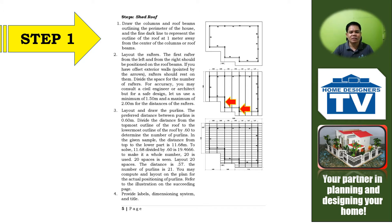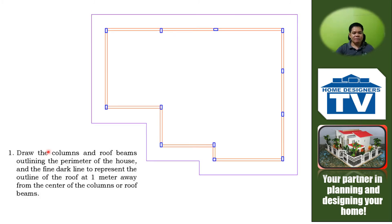We'll start with step number one. The first thing you're going to do is draw the columns and roof beams outlining the perimeter of the house, using a fine dark line to represent the outline of the roof at one meter away from the center of the columns or roof beams. These are the roof beams outlining the perimeter of the house.